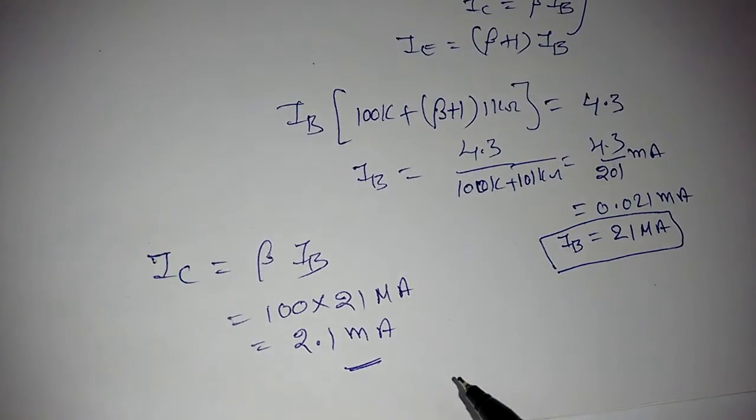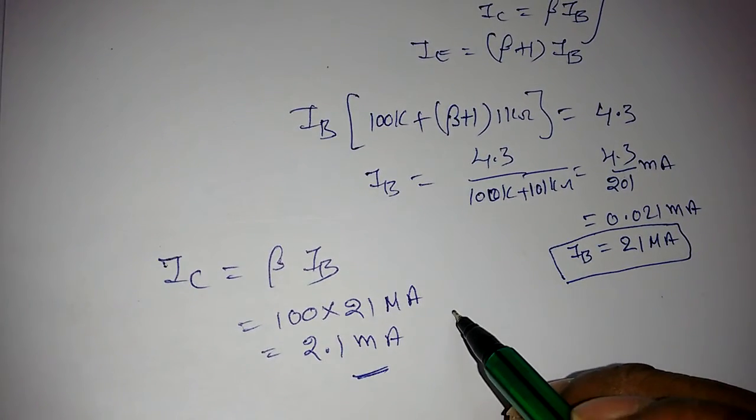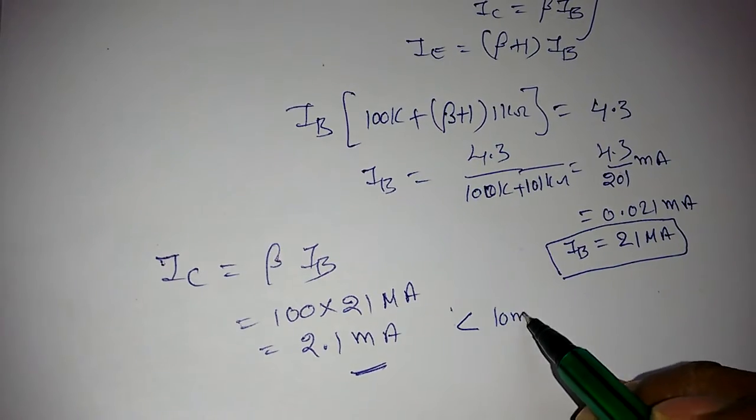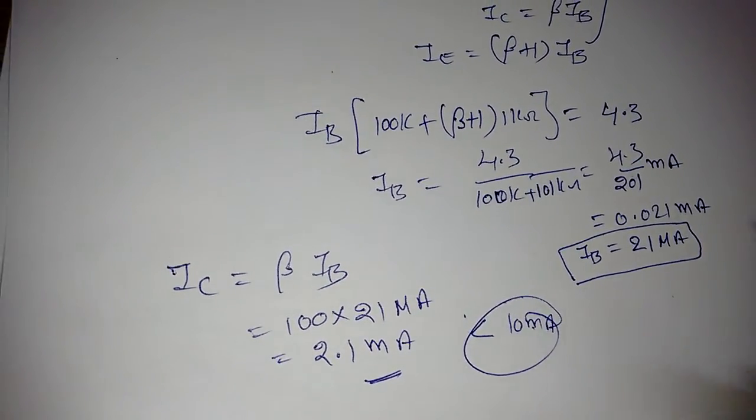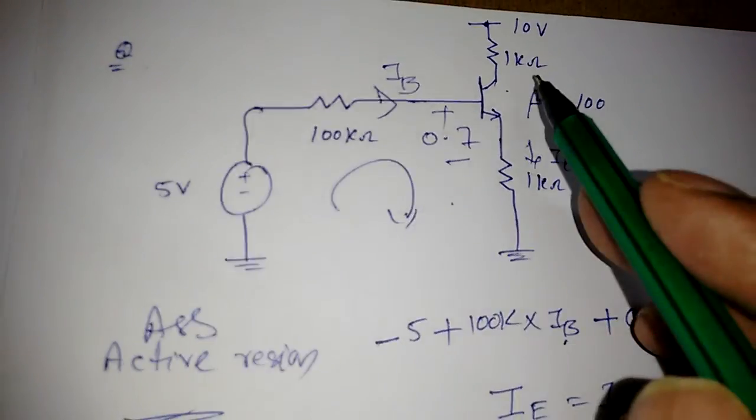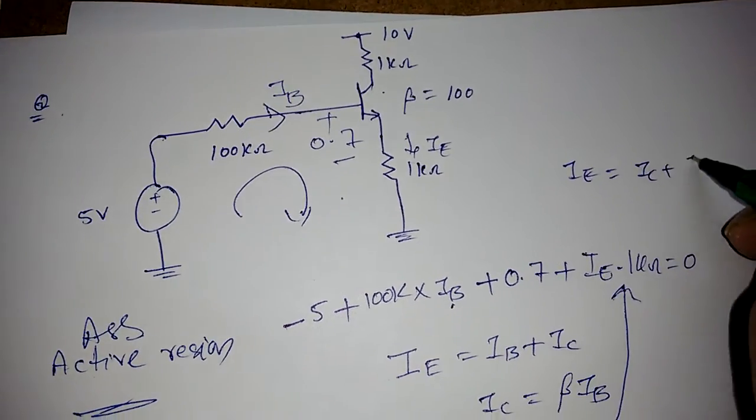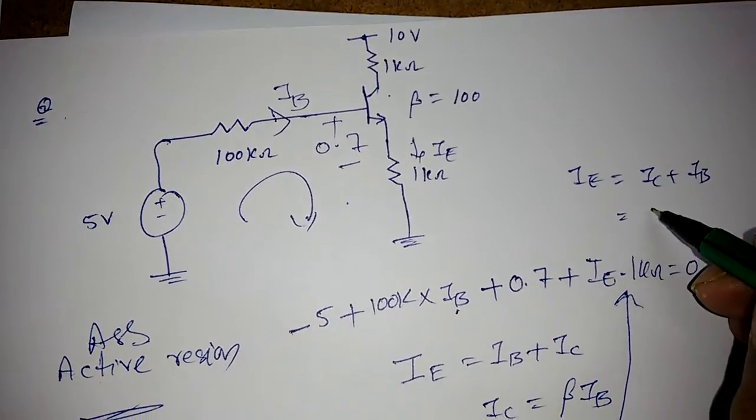IC is less than the required current. Generally it should be less than 10 mA, so there are some conditions we will check. Now I know IB and IC.